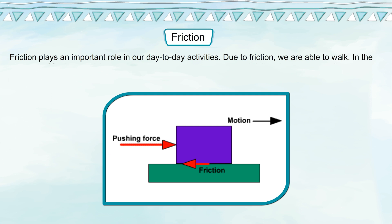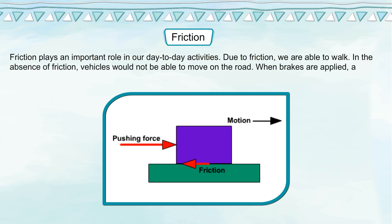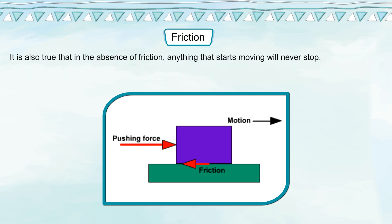Due to friction, we are able to walk. In the absence of friction, vehicles would not be able to move on the road. When brakes are applied, a vehicle stops due to the friction between the brakes and the wheels. It is also true that in the absence of friction, anything that starts moving will not stop.